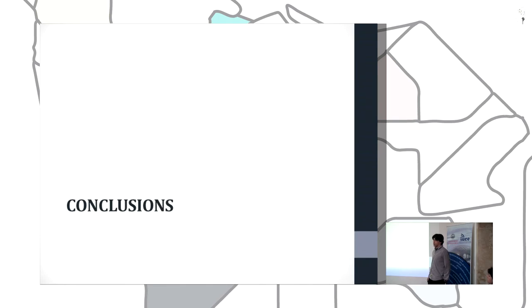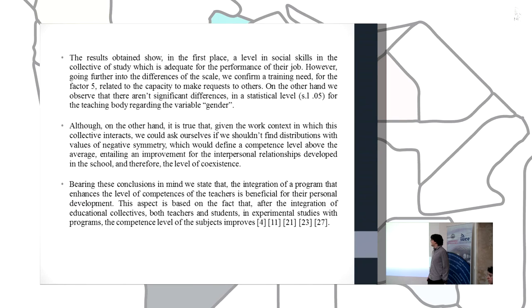Now we are going to expose the conclusions of the study. The results obtained show in the first place a level in social skills in the collective of study which is adequate for the performance of their job. However, going further into the differences of the scale, we confirmed a training need for factor 5, related to the capacity to make requests to others. On the other hand, we observed that there are significant differences in a statistical level with a significance level of 0.05 for the teaching body regarding the variable gender.